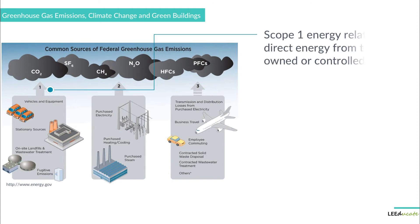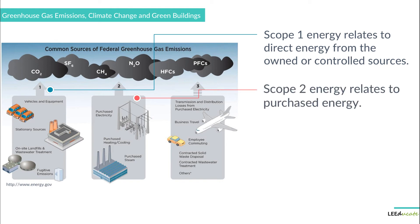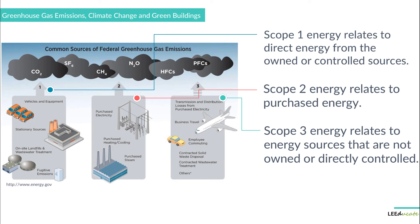Scope 1 energy relates to the direct energy from owned or controlled sources, while Scope 2 energy relates to purchased energy, and Scope 3 energy relates to energy sources that are not owned or directly controlled. For example, energy generated on site through burning of fossil fuels falls under Scope 1, and the resulting greenhouse gas emissions are classified as a Scope 1 emission. Electricity bought from a utility company is classified as Scope 2 energy, and the resulting greenhouse gas emission is a Scope 2 emission.